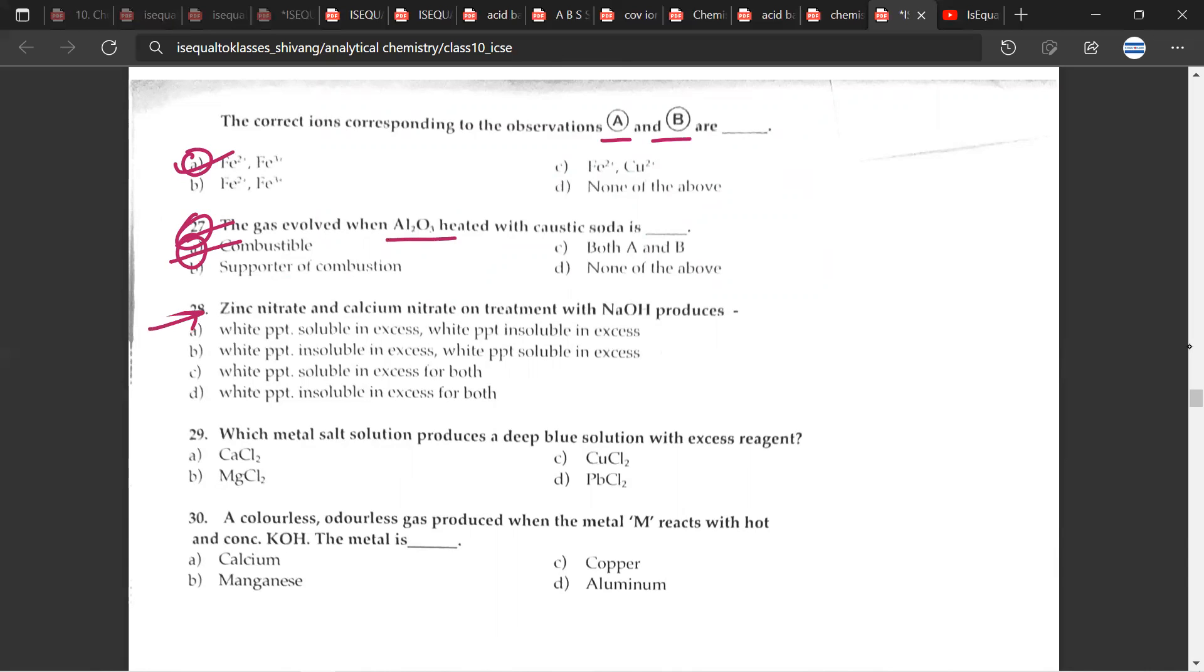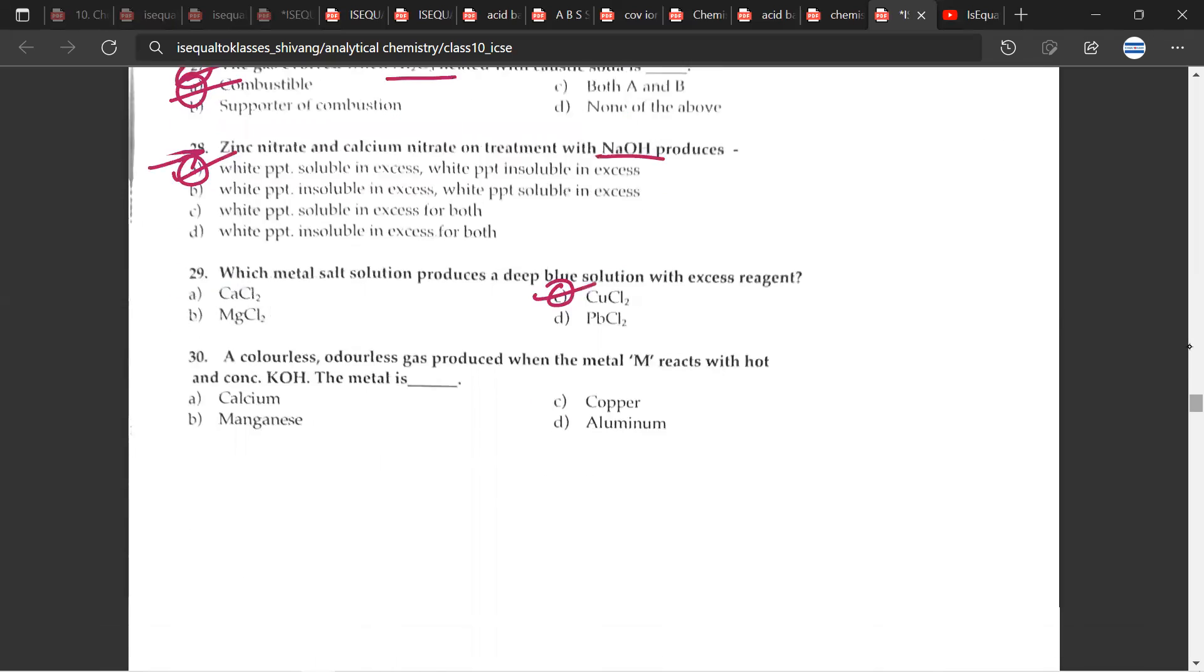28th question. Zinc nitrate and calcium nitrate on treatment with NaOH, so that means sodium hydroxide, produces what? So it produces A, white precipitate soluble in excess or white precipitate that is insoluble in excess. Which metal solution produces a deep blue solution with excess reagent? So for this, the correct answer would be C, copper chloride. Then finally, moving on to the last question. A colorless odorless gas produced when the metal M reacts with hot and concentrated potassium hydroxide. The metal would be aluminum.